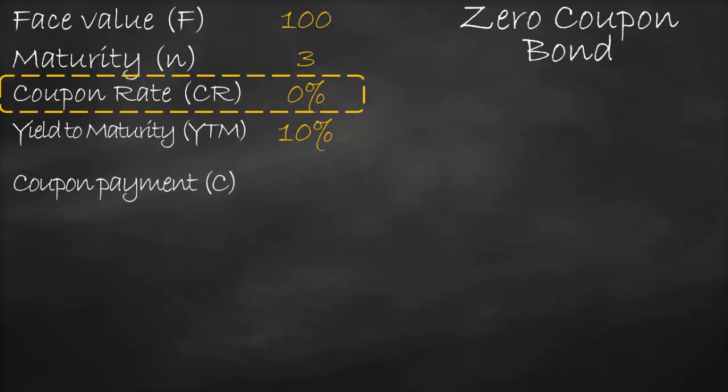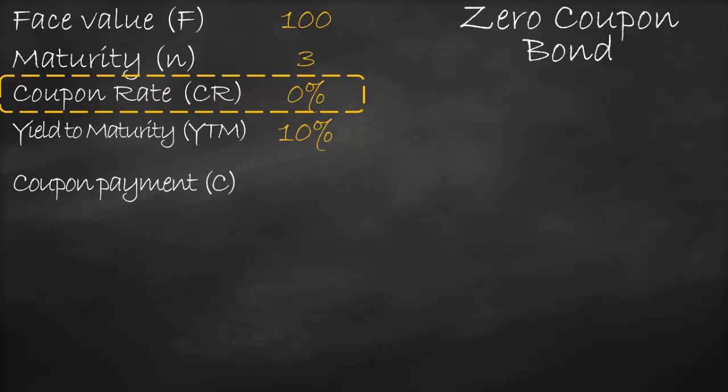We don't need to calculate the coupon payment because it's a zero coupon bond. But if we use the formula, coupon payment equals coupon rate times face value, which is zero percent times 100, giving us zero.